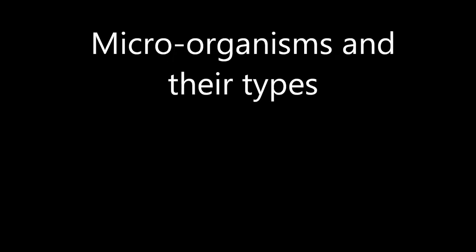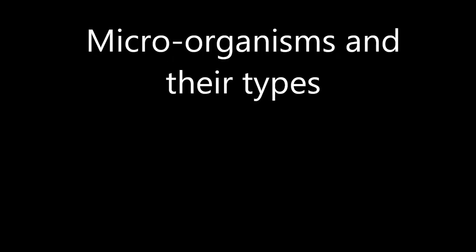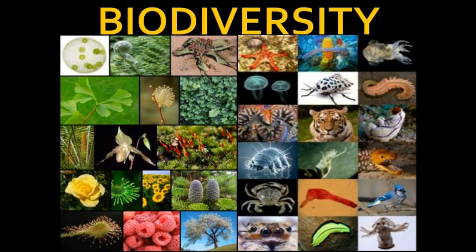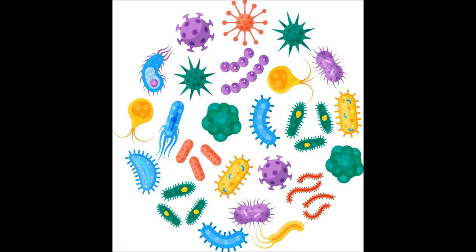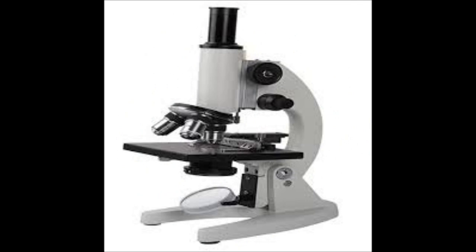Children, today we will read about microorganisms and their types. As we know that the world has diverse types of organisms. We can see some of the organisms whereas we fail to see some other organisms. There are some tiny or minute organisms which cannot be seen through our naked eyes but can be seen through a microscope. Such organisms are called microorganisms.